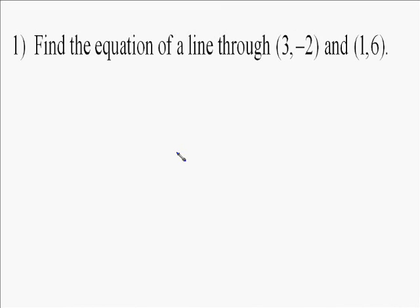This video asks us to find the equation of a line through two points. When we do this, we always use y equals mx plus b, or the point-slope formula. We're going to use y equals mx plus b, the slope-intercept form, to find the equation of the line.